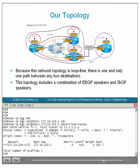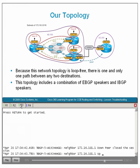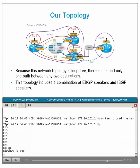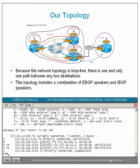Running show IP BGP neighbor advertised routes, R1 is now advertising the 172.16.104 prefix to R3. Verifying that R3 has received the route and installed it in its BGP table and local routing table — the route is there with the greater-than symbol. The next hop is 172.16.102.1, set with next-hop self, and the AS path is 200. The 172.16.104 prefix has been successfully installed in the local routing table as well.